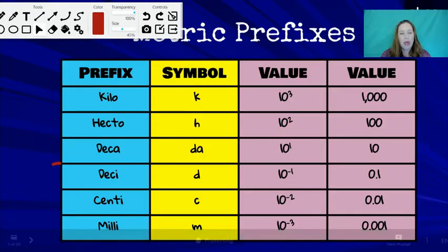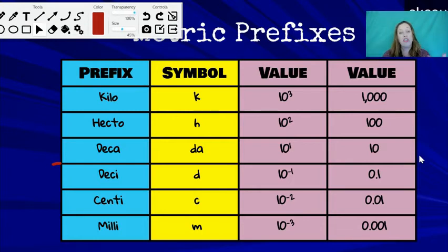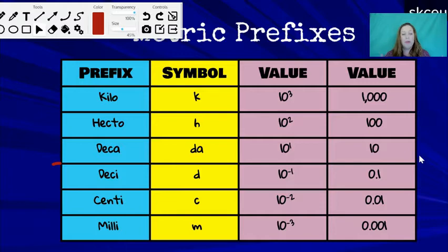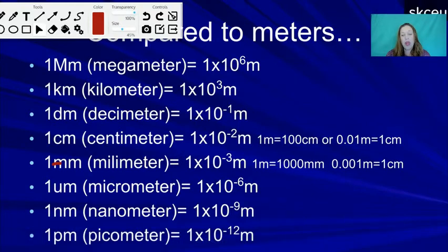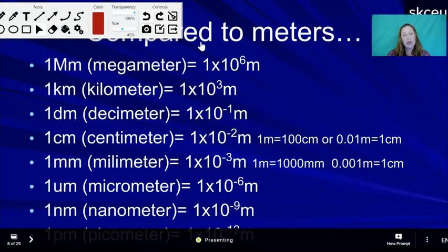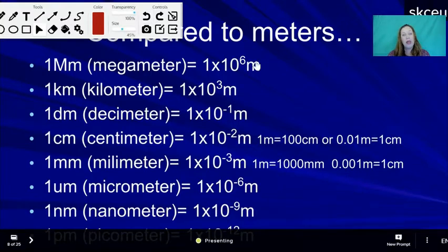The prefixes and their values: kilo (k) = 1,000; hecto (h) = 100; deca (da) = 10. So there are 10 meters in one decameter, and 0.1 meters in one decimeter. For centi, there are 100 centimeters in one meter, or 0.01 meters in one centimeter.